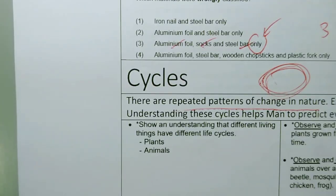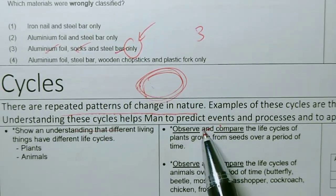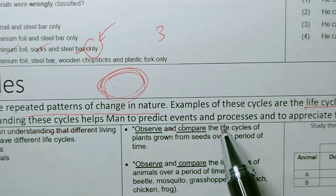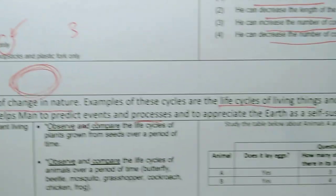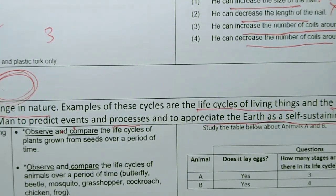Understanding these are very important. It helps us to predict events. When we understand these cycles we can predict what will happen and the processes that can happen. We can appreciate Earth as a self-sustaining system and understand how best we can keep our Earth sustainable and preserve and conserve things.